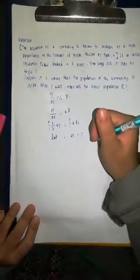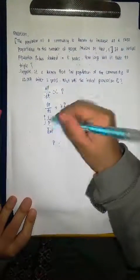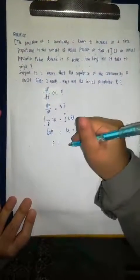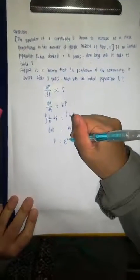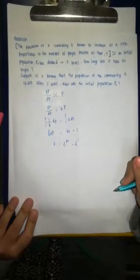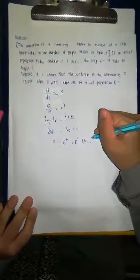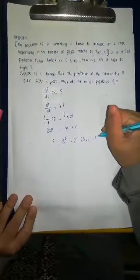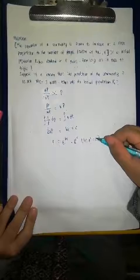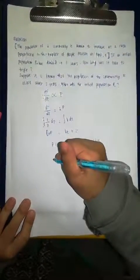After that, we solve for P. We move ln to the other side and it will become e to the power of KT, e to the power of C. And with this, let e to the power of C equal to A. It can be anything. It could be B or C, it depends.